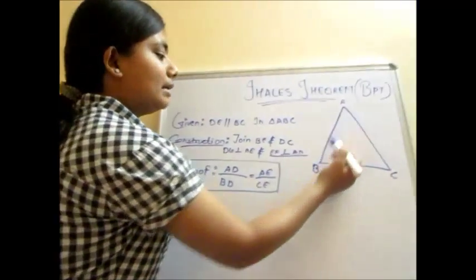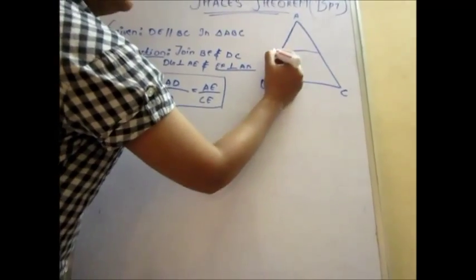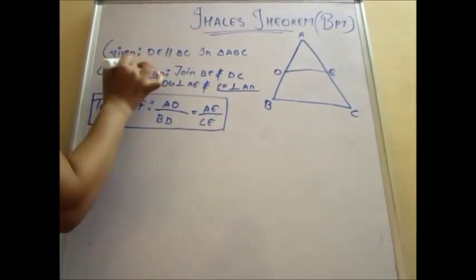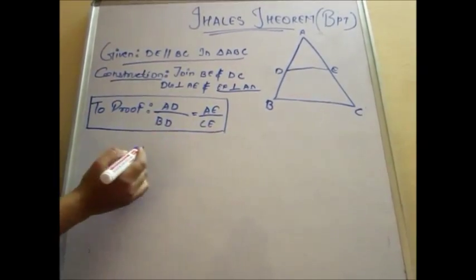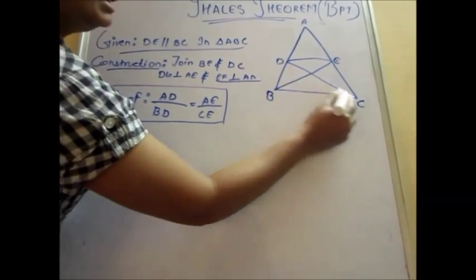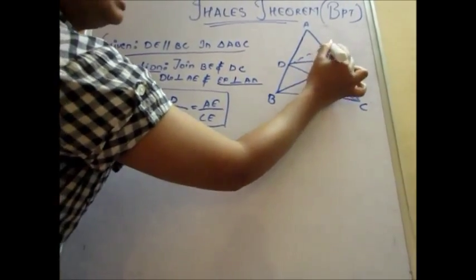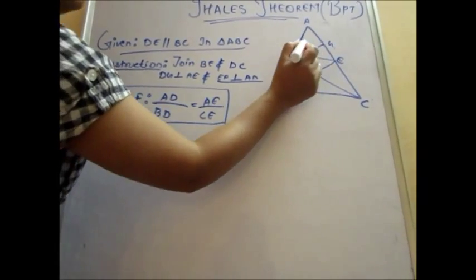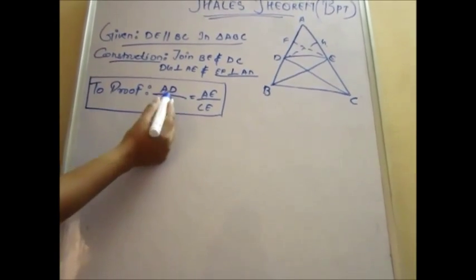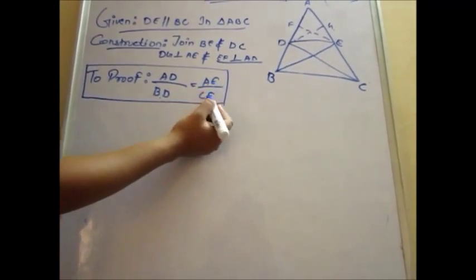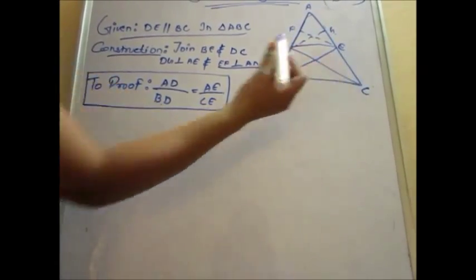For example, the given figure is triangle ABC. Here DE is a line parallel to BC, which is given in triangle ABC. For construction, we will join BE and DC, and draw a perpendicular DG on AE and EF on the base AD. Now we have to prove that AD upon BD equals AE upon CE.